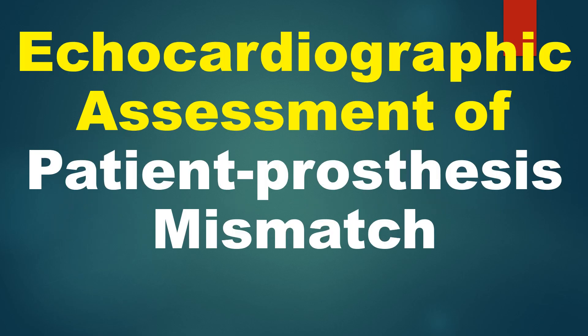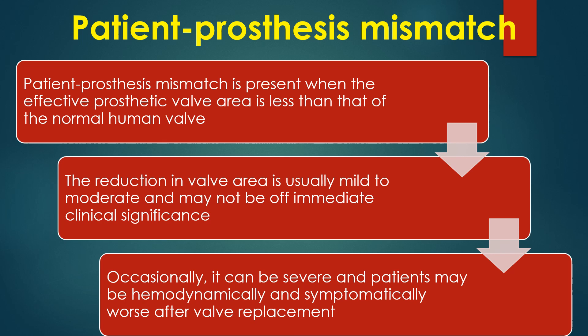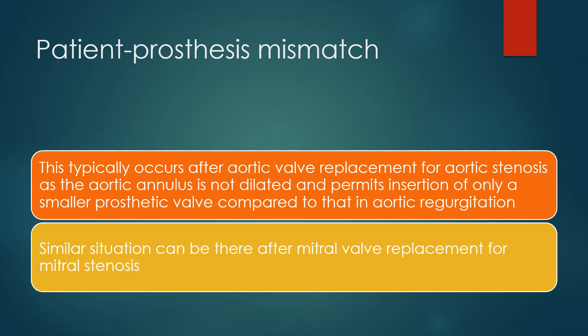Discussion on echocardiographic assessment of patient-prosthesis mismatch. Patient-prosthesis mismatch is present when the effective prosthetic valve area is less than that of a normal human valve. The reduction in valve area is usually mild to moderate and may not be of immediate clinical significance. Occasionally it can be severe, and patients may be hemodynamically and symptomatically worse after valve replacement. This typically occurs after aortic valve replacement for aortic stenosis, as the non-dilated aortic annulus permits insertion of only a smaller prosthetic valve compared to that in aortic regurgitation. A similar situation can occur after mitral valve replacement for mitral stenosis.